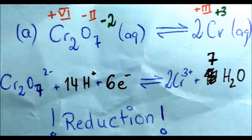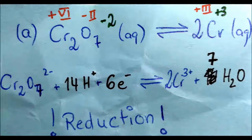For the oxygen we need 14 hydrogen ions to make seven water molecules. The ionic equation is: dichromate (Cr₂O₇²⁻) reacts with 14 hydrogen ions and six electrons to give two chromium(III) ions and seven water molecules.